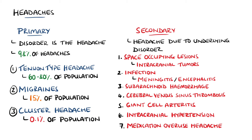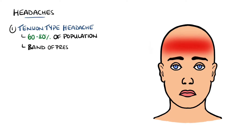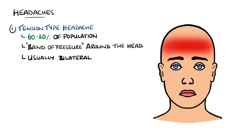Tension-type headaches are the most common headaches. These are often described as feeling like a band of pressure around the head, and can be felt diffusely across the head, although in most instances it is felt bilaterally. The pain is an aching, dull pain, and there may be some associated tenderness of the scalp, neck, and shoulders.